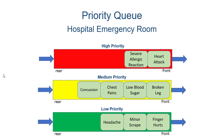So conceptually what's going on is it's almost like you have multiple queues: a high priority queue, a medium priority queue, and a low priority queue. You only serve the medium priority queue if the high priority queue is empty, and you only service the low priority queue if there's nothing in the high priority or medium priority queue. This is one way to implement a priority queue — you have multiple queues and go from high to low priority looking for the next element to service.